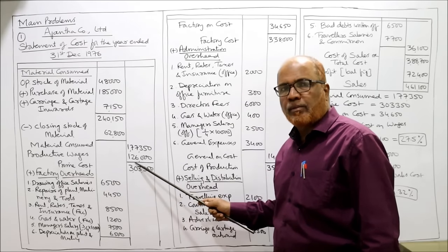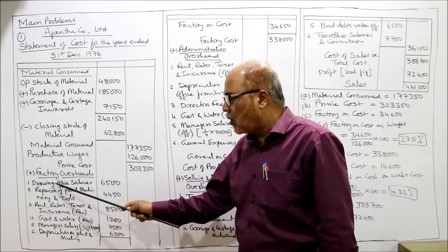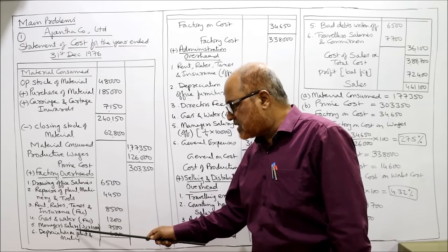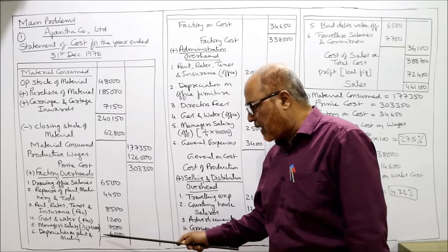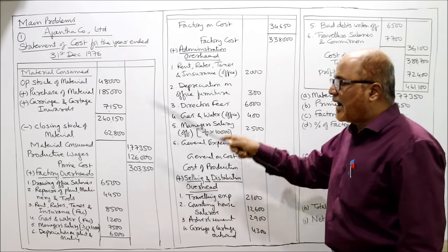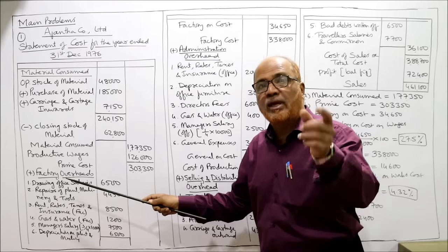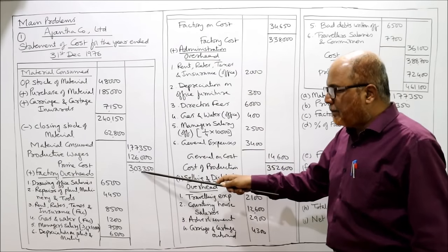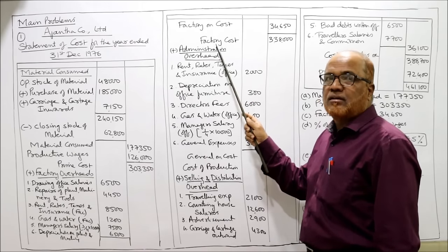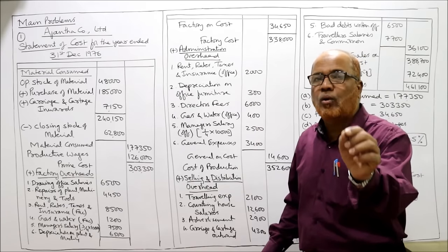Productive wages are directly given — no adjustment needed. Adding factory overhead to prime cost gives factory cost. Factory overhead items include: drawing office salaries, repairs to plant/machinery/tools, rent/rates/taxes/insurance (factory), gas and water (factory), manager's salary 3/4 of 10,000 = 7,500, depreciation on plant and machinery 6,500. Total factory overhead is 34,650. Factory on cost is simply another name for factory overhead. Prime cost plus factory on cost equals factory cost — don't confuse these two different terms.